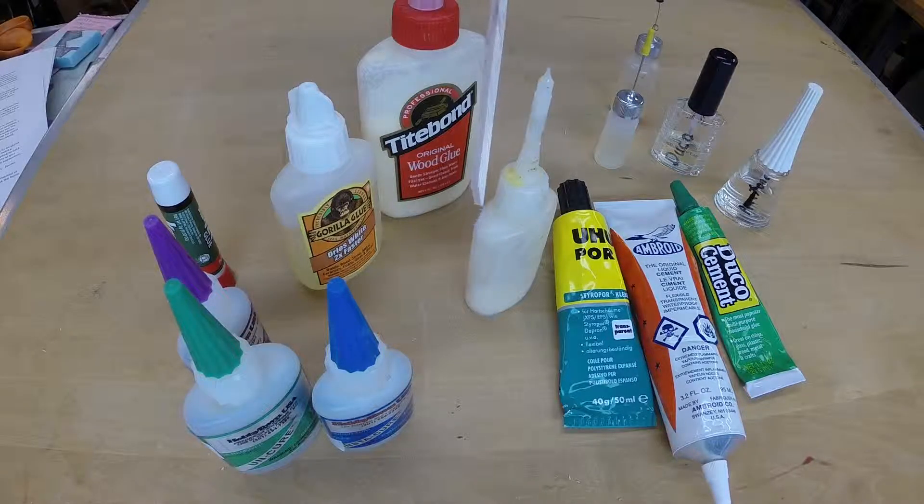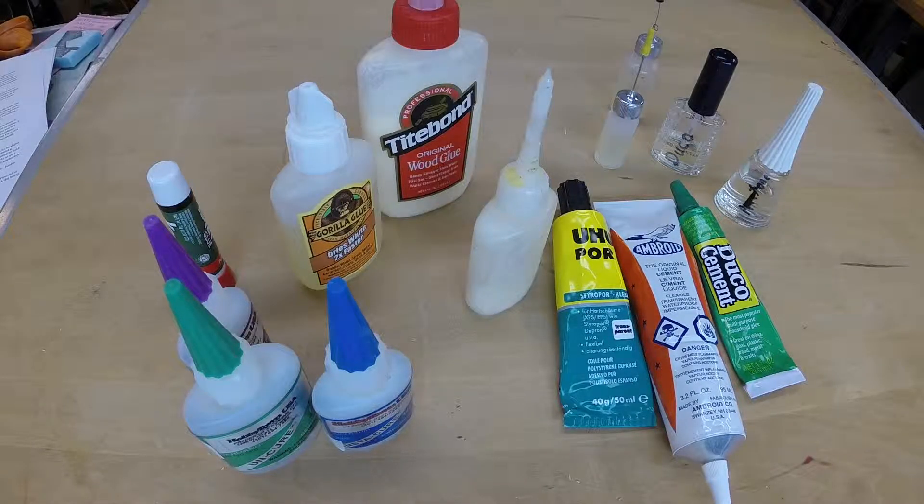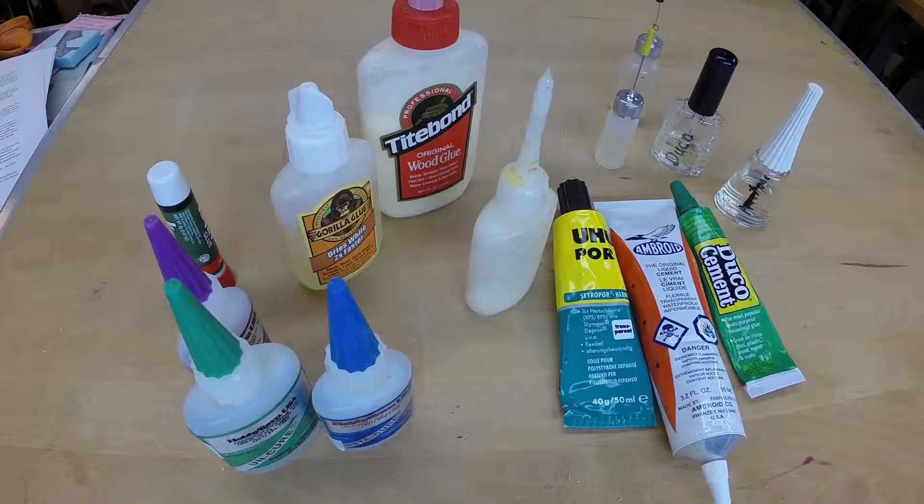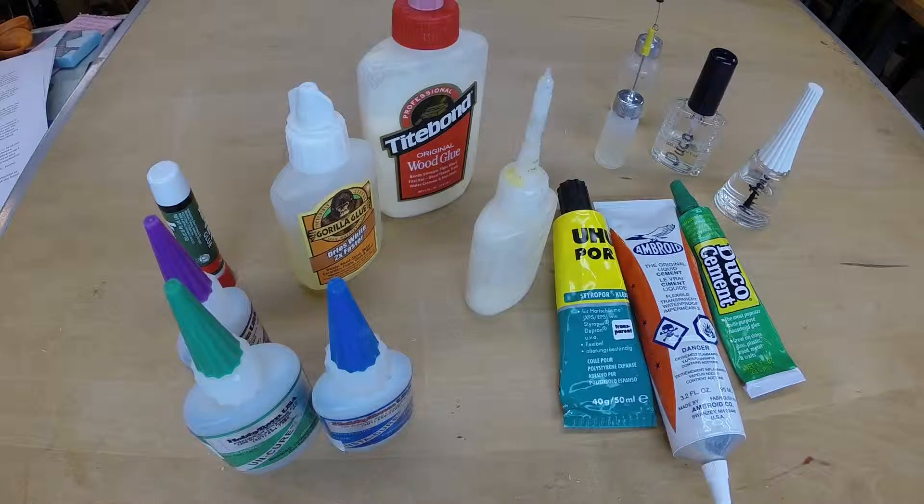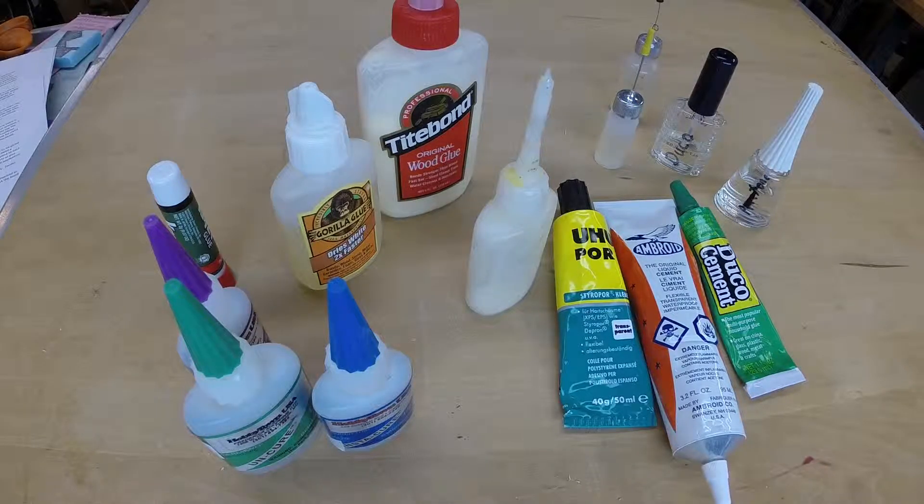Aliphatic resin, commonly called carpenter's or wood glue, is a good alternative, especially for larger structures such as boom-a-lever and bridge building. Please note this is not the same as white glue.